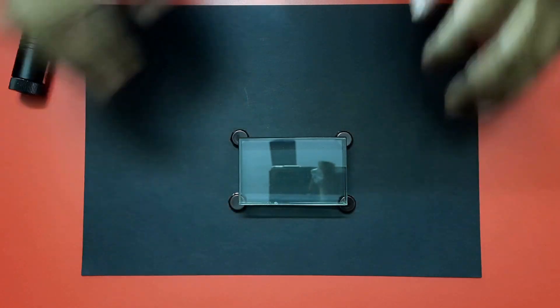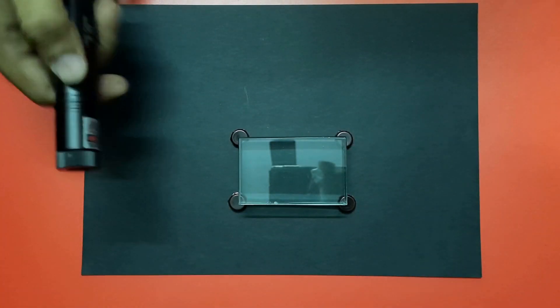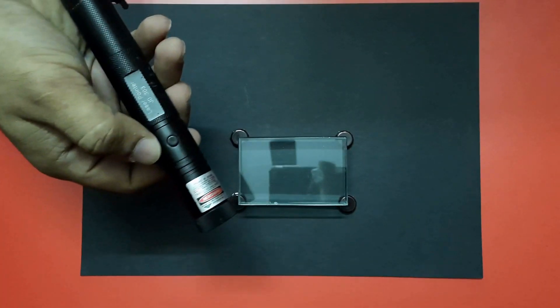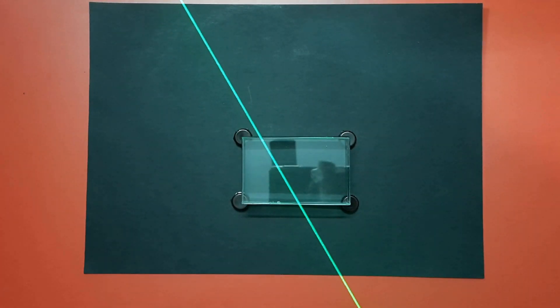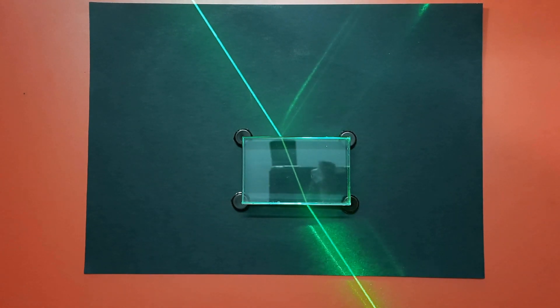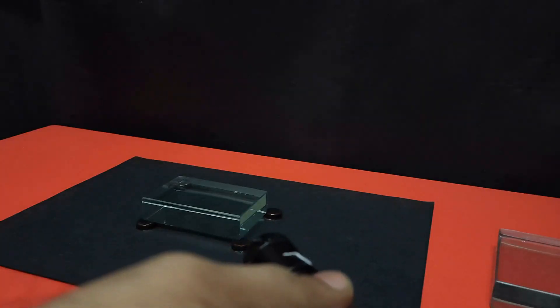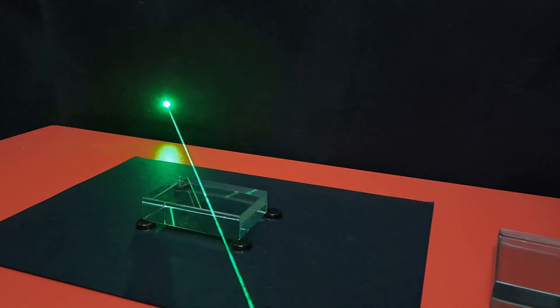For the activity we are taking a powerful green laser torch. Now switch it on. We can observe the laser beam travels in a straight line in air medium, but when it is passing through the glass slab it bends.